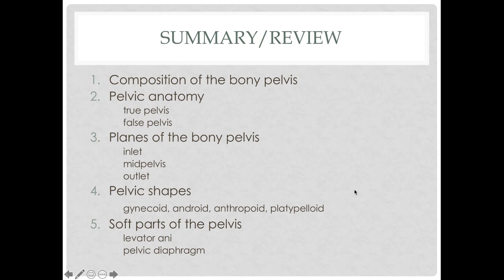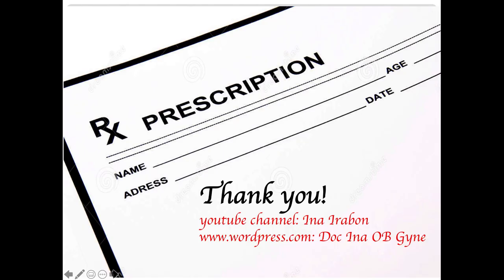That is the end of this lecture. In summary, we talked about the composition of the bony pelvis and pelvic anatomy — specifically the true and false pelvis — the three planes of the bony pelvis (inlet, mid-pelvis, and outlet), the different pelvic shapes (gynecoid, android, anthropoid, and platypelloid), and the soft parts of the pelvis. Thank you for watching.